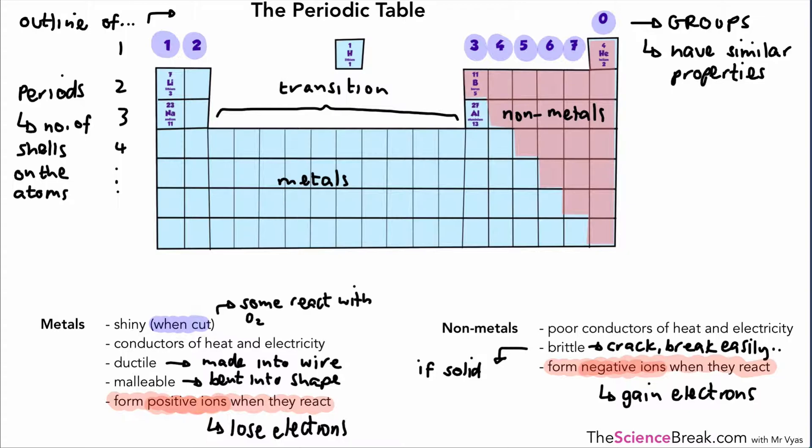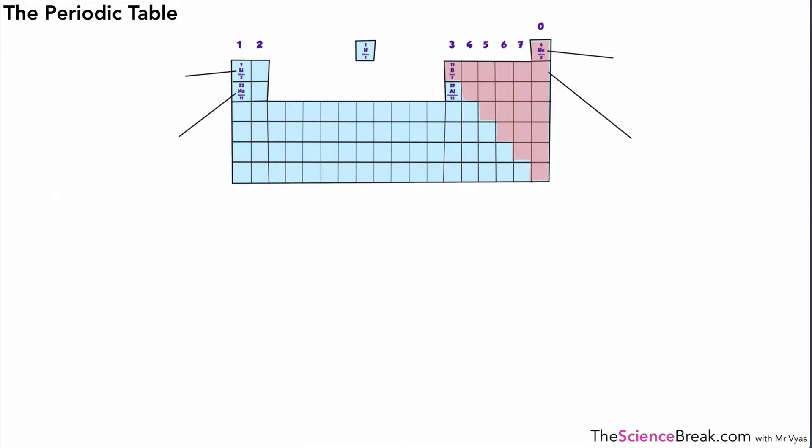We need to add one more point about the metals that we've missed out, and that is that they all have high melting points and high boiling points, apart from the metal mercury, which actually is a liquid at room temperature. But in general, all the rest of the metals have high melting and boiling points. That's one of the features for the metals column.